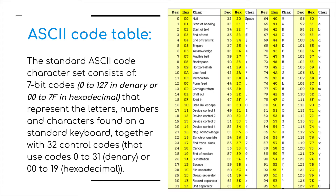Together with that there are 32 control codes moving from 0 to 31. For example, the backspace is represented by the number 8 and the escape key is represented by the number 27, or hexadecimal 1B.